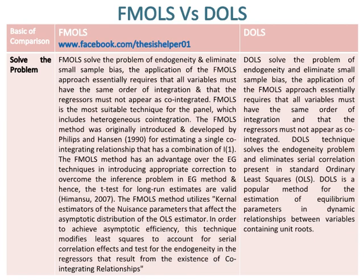The FMLS method was originally introduced and developed by Phillips & Hansen (1990) for estimating a single cointegrating relationship that has a combination of I(1). FMLS has an advantage over EG techniques by introducing appropriate corrections to overcome the inference problem, making t-tests for long-run estimates valid (Hamansu, 2007).